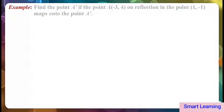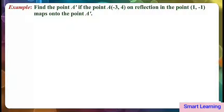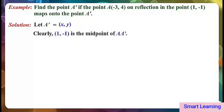Let's take the next example. Find the point A dash if the point A, minus 3 comma 4, on reflection in the point 1 comma minus 1, maps onto the point A dash. Let's solve this. Let A dash be equal to x comma y. Clearly, 1 comma minus 1 is the midpoint of A A dash.